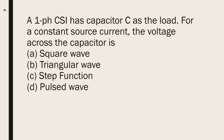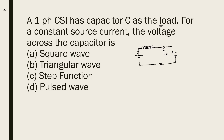A single-phase CSI (current source inverter) has a capacitor as the load. For a constant current, the voltage across the capacitor needs to be determined. A current source inverter is basically a DC source in series with a large value of inductance. This current source inverter feeds a capacitor as load. The load current equals the source current since it is a series circuit, so the source current remains constant.